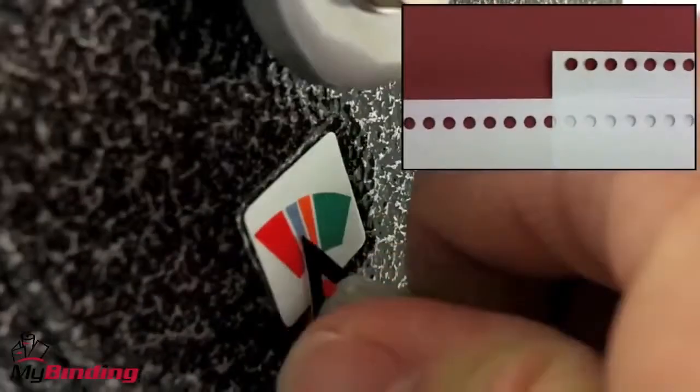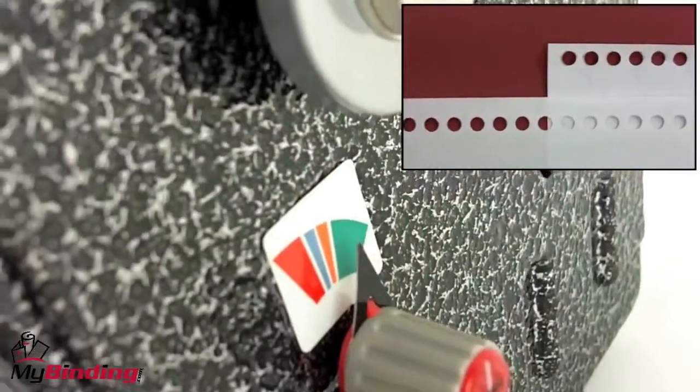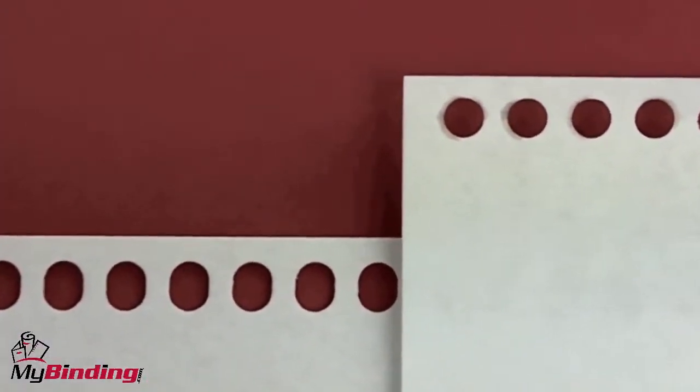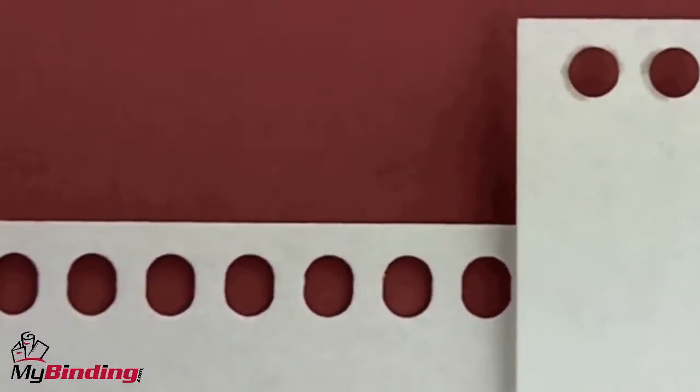The depth of margin control knob provides the correct punch margin depth for each coil size and maximizes the document's tear resistance, and the oval hole punching makes it not only stronger but easier to insert the coil.